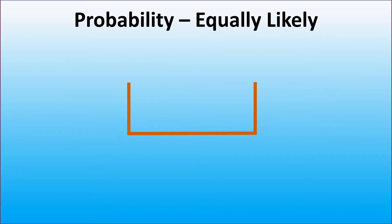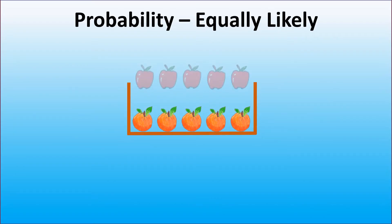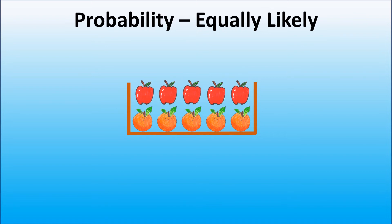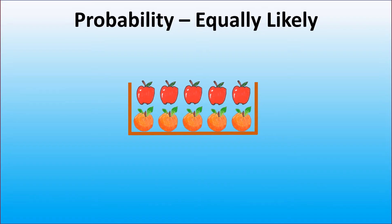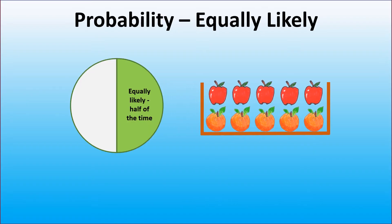What if we have the same number of oranges and apples in the box? How would we describe the chance of picking an orange from the box? As we have exactly the same number of oranges and apples in the box, the event of picking an orange will happen half of the time. Thus, the chance of picking an orange is equally likely as picking an apple from the box.